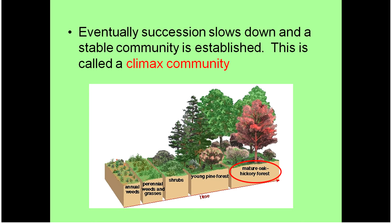Eventually, succession is going to slow down. It's not going to continue replacing our groups of organisms forever. Eventually, we get to a stable community — this is our climax community, the final group of organisms. In Virginia, in a temperate deciduous forest, that's going to be comprised of mostly oak and hickory trees, which are hardwood trees, and they're very tall.